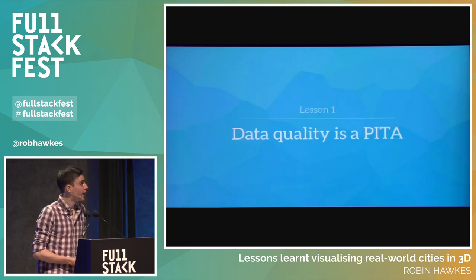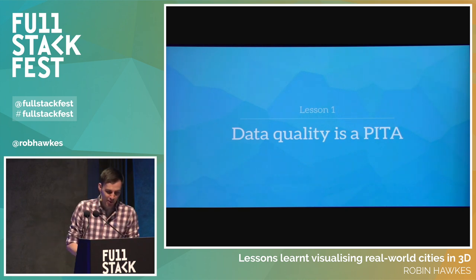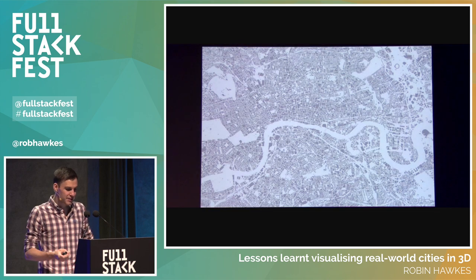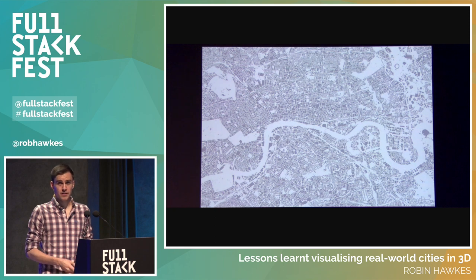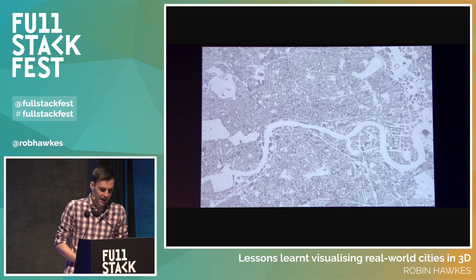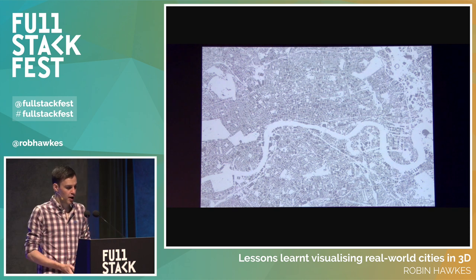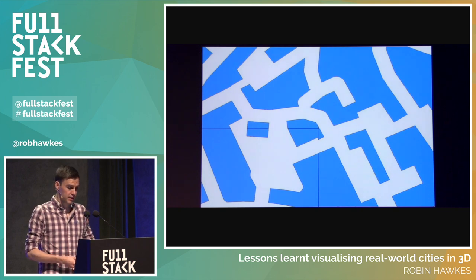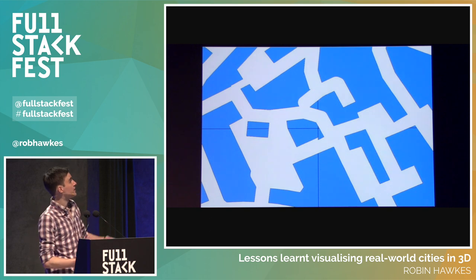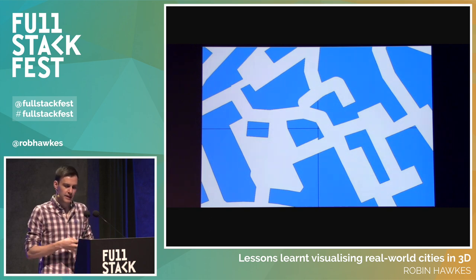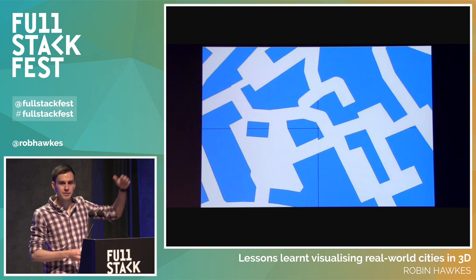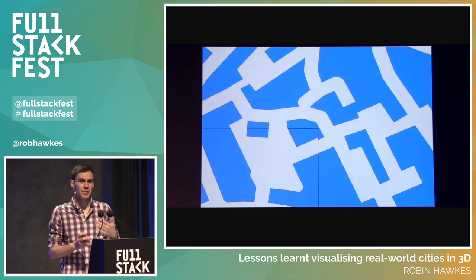Lesson one: data quality is a pain in the bum. Buildings were the first challenge regarding data quality, and they're very important if you want to visualize a city. You could use Ordnance Survey data in the UK — it's free but quite simplified and inaccurate, so buildings don't really look like buildings. It can also slice buildings into multiple parts because of its grid system, and it has no heights, which is a problem if you're trying to do things in 3D.